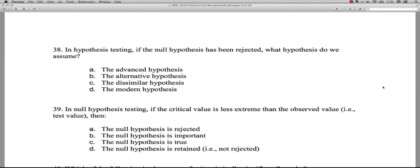Question 38: In hypothesis testing, if the null hypothesis has been rejected - now the null hypothesis is normally that there is no difference, for instance there's no difference between groups or there's no correlation between variables - and if you've rejected that because you have evidence that it's sufficient to say that that is probably not the case, then what hypothesis do we assume? In other words, what's the other hypothesis called? The advanced hypothesis? No. The alternative hypothesis? Yes, that is the correct answer. It's also called, if you're doing an experiment, sometimes they call it an experimental hypothesis. And they can call it H1 for hypothesis 1 because the null is known as H0, or they can call it HA for alternative hypothesis. The dissimilar hypothesis and the modern hypothesis, that's just made up nonsense. Ignore those.